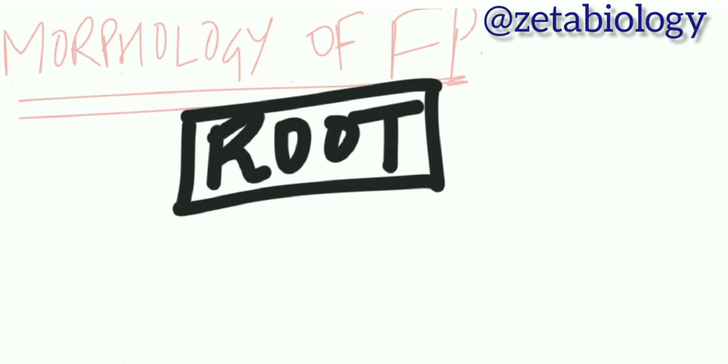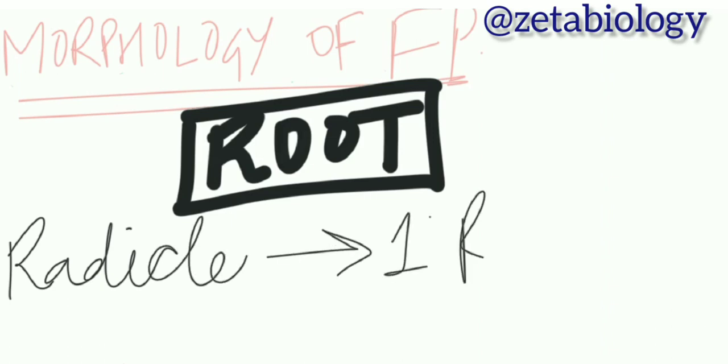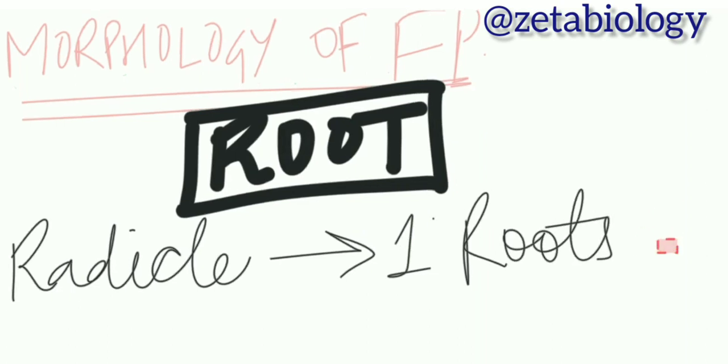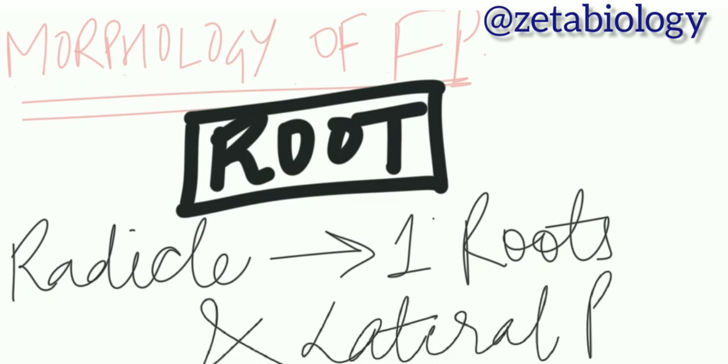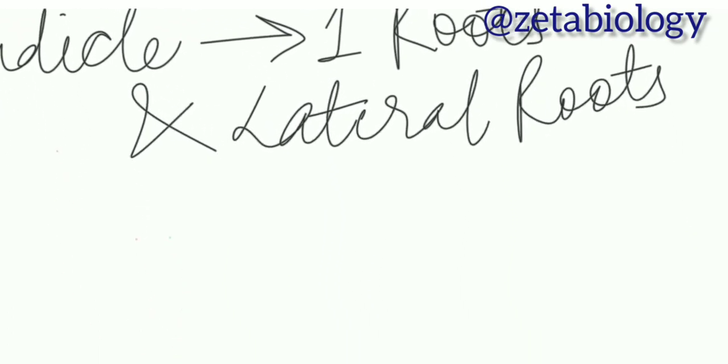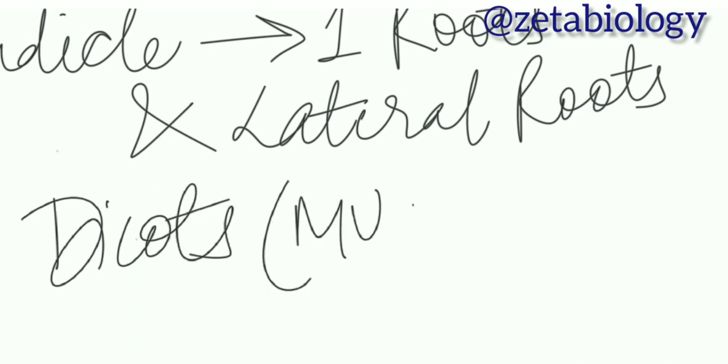The direct elongation of the radical leads to the formation of primary roots and lateral roots. These are called secondary and tertiary roots, which are part of the tap root system. An example is dicot plants, for example mustard.